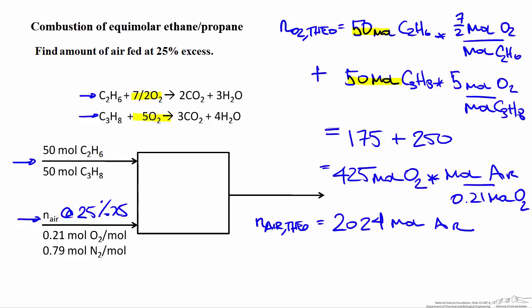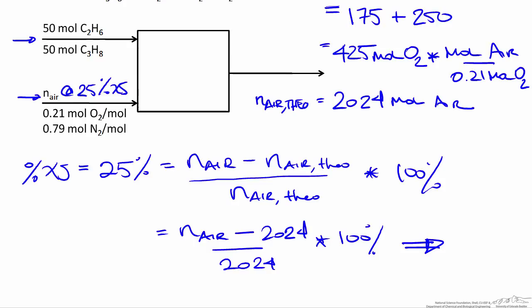With air fed at 25% excess and a theoretical requirement of 2,024 moles, we plug into the percent excess air formula: 25% equals the moles of air fed minus 2,024 divided by 2,024, times 100%. Solving this, the number of moles of air actually fed to the reactor is 2,530 moles of air. This was found by assuming complete combustion of each fuel in the mixture.